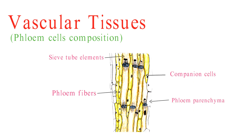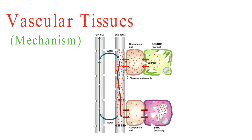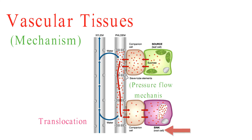These various components of phloem work in harmony to transport sugars and other organic compounds efficiently throughout the plant. Phloem functions through a process called translocation, where sugars are actively transported from source to sink tissues. This happens thanks to the pressure flow mechanism, with companion cells supporting the metabolic functions of sieve tube elements.